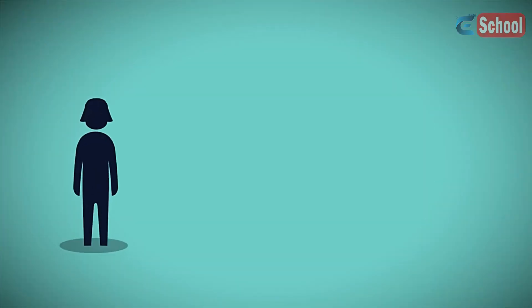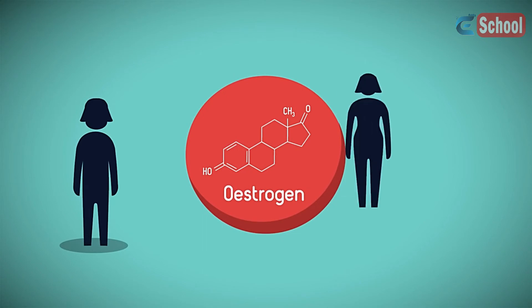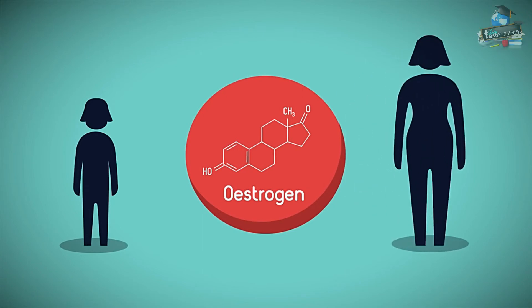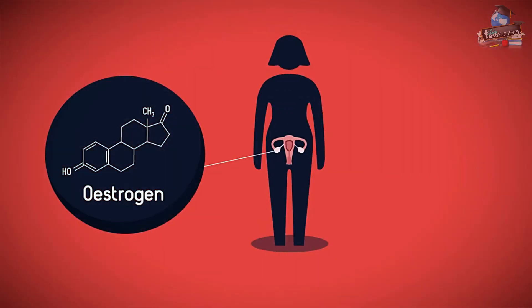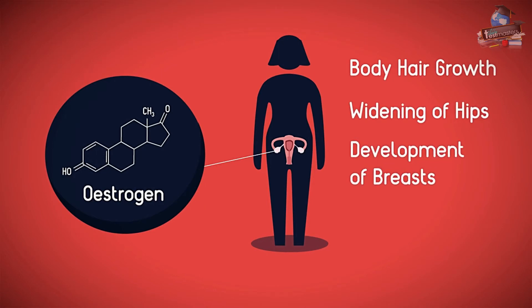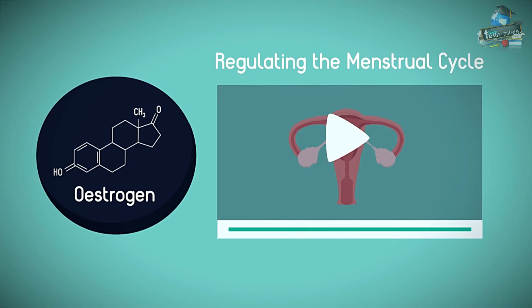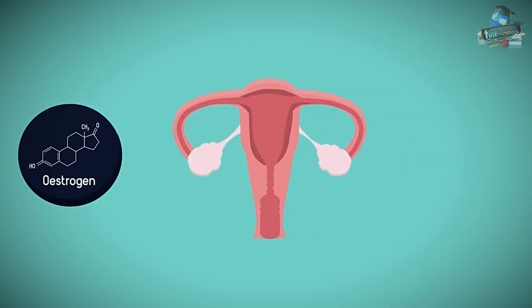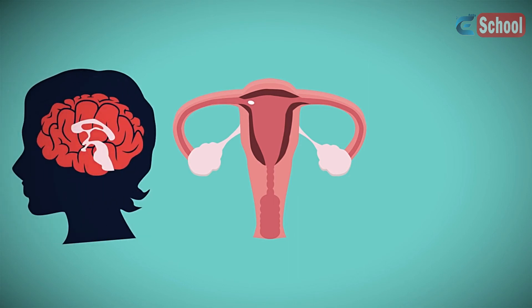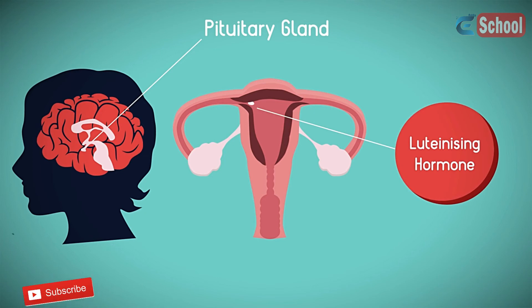In females, the hormone responsible for physical changes during puberty is oestrogen. It is secreted by your ovaries and is responsible for some body hair growth, widening of the hips and development of breasts. Oestrogen also plays an important role in regulating the menstrual cycle. It thickens the uterus lining in anticipation of ovulation, which is the release of a mature egg from an ovary. In addition, oestrogen stimulates the pituitary gland to secrete the luteinizing hormone, which is directly responsible for ovulation.